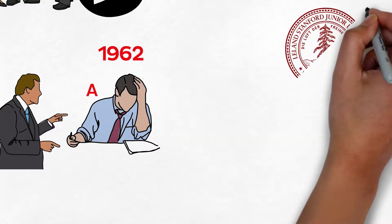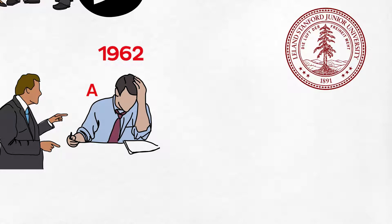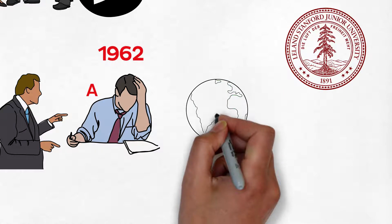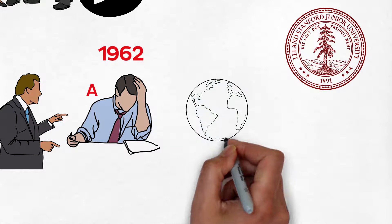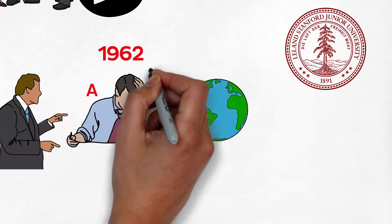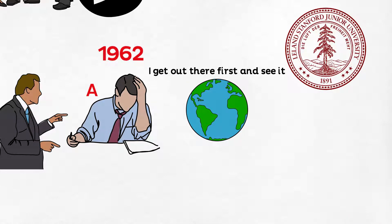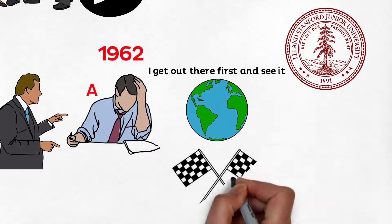After Phil graduated from Stanford with an MBA, he wanted to go on a backpacking trip around the world. He said to himself, how can I leave my mark on the world? I thought unless I get out there first and see it. He further stated, before running a big race, you always want to walk the track.